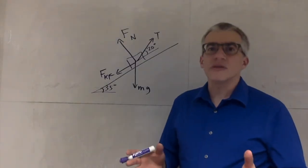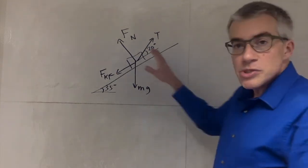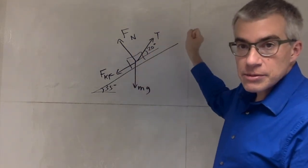Okay, how do we break a vector into components? Suppose you have a block being pulled up an incline, right?